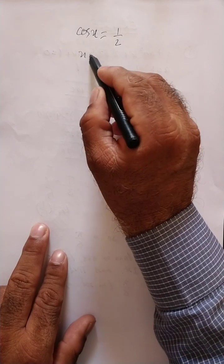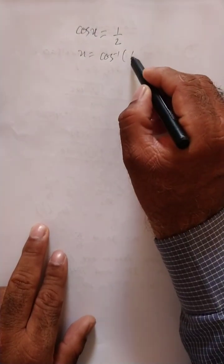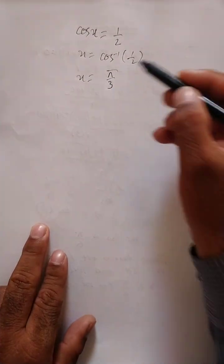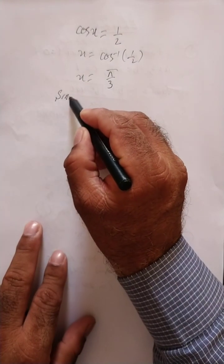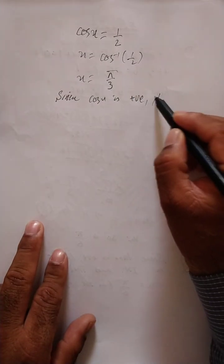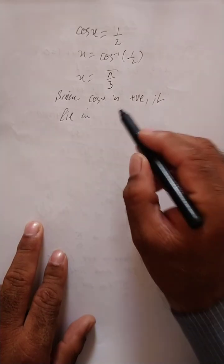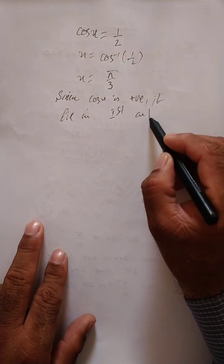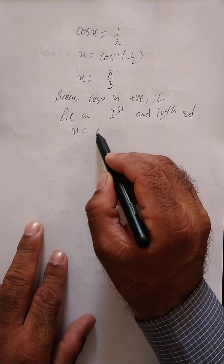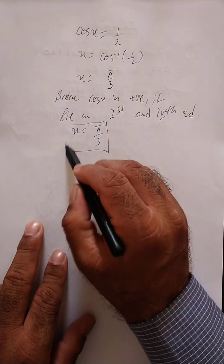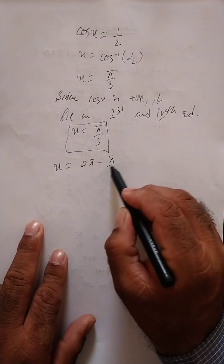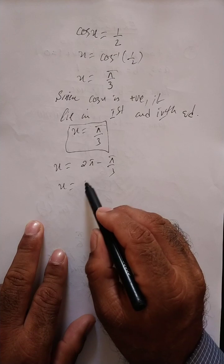Now cos x = 1/2, so this is cos inverse (1/2), which is 60 degrees, meaning pi upon 3. Since cos x is positive, it lies in the first and fourth quadrant. In the first quadrant there is no change, the angle remains the same. In the fourth quadrant: 2pi minus pi/3 = 5pi/3.